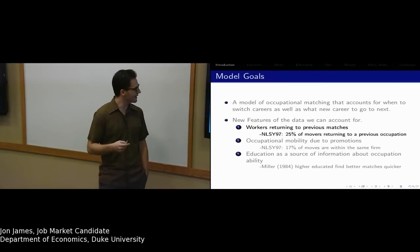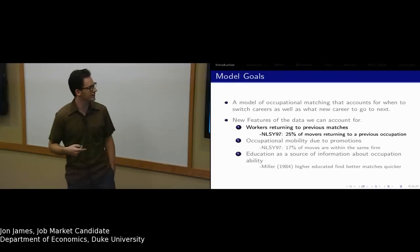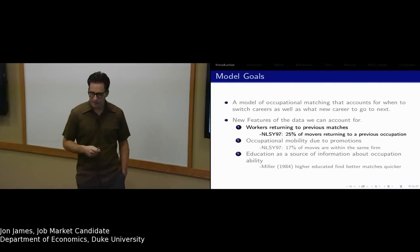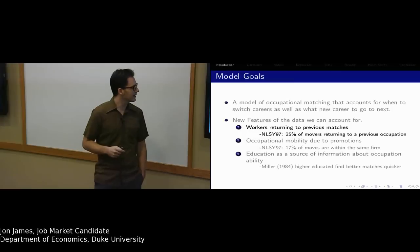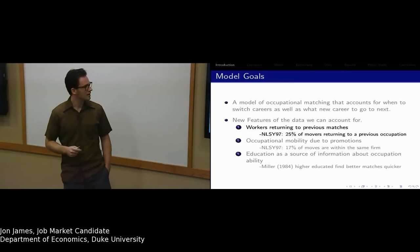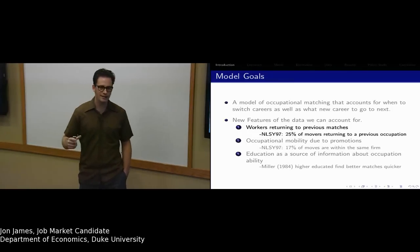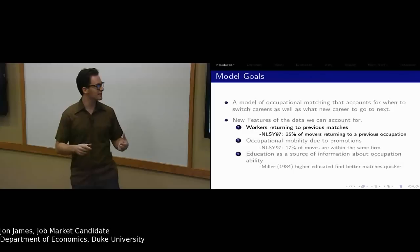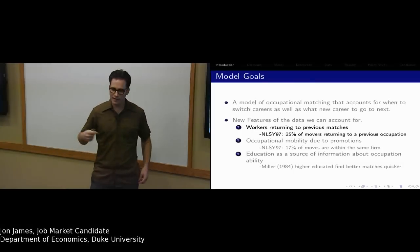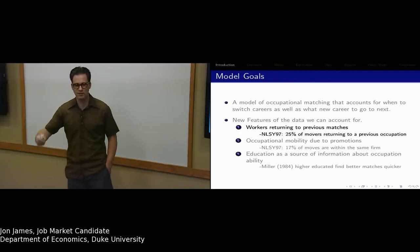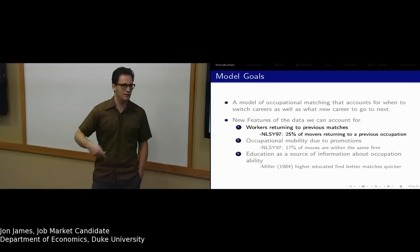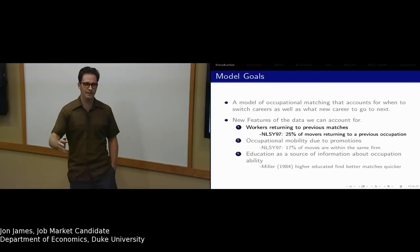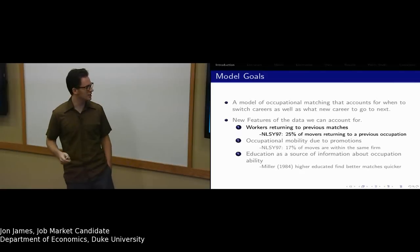The first feature is workers returning to their previous matches. In the cohort of the NLSY-79 that I look at, 25% of movers are returning to a previous occupation. We want to understand what's causing an individual to change occupations but then go back to that occupation. The current literature views each occupational change as a new match, a new occupation. They're not keeping track of the past sequences of occupational changes.